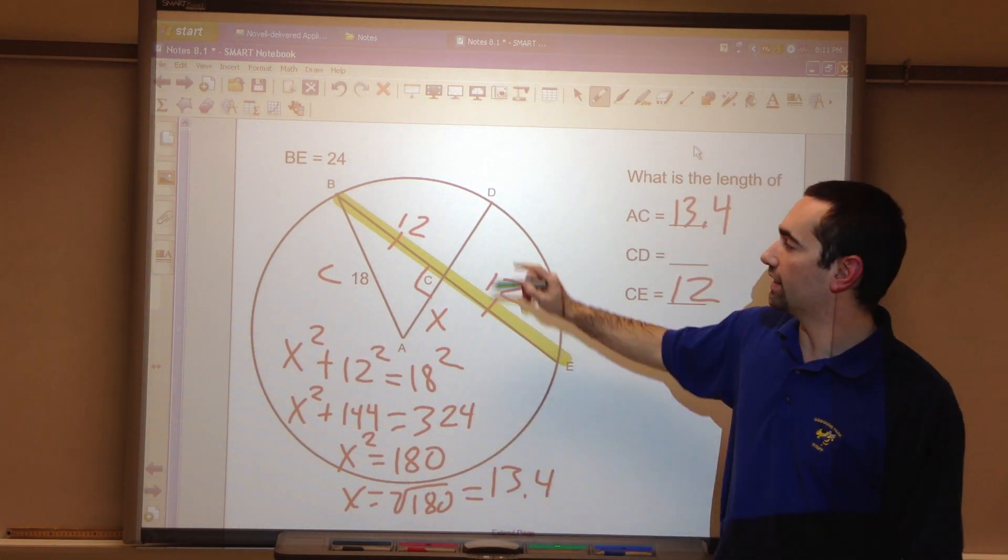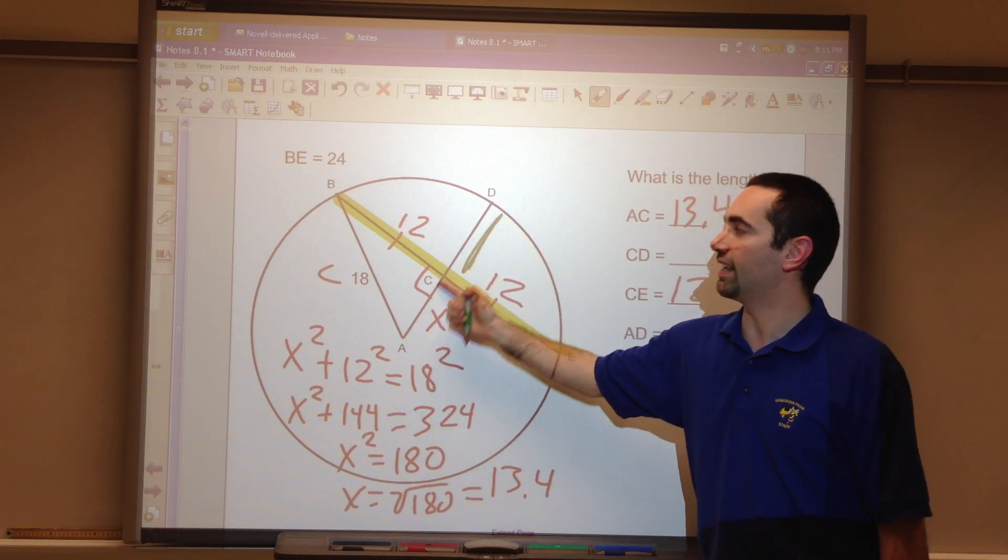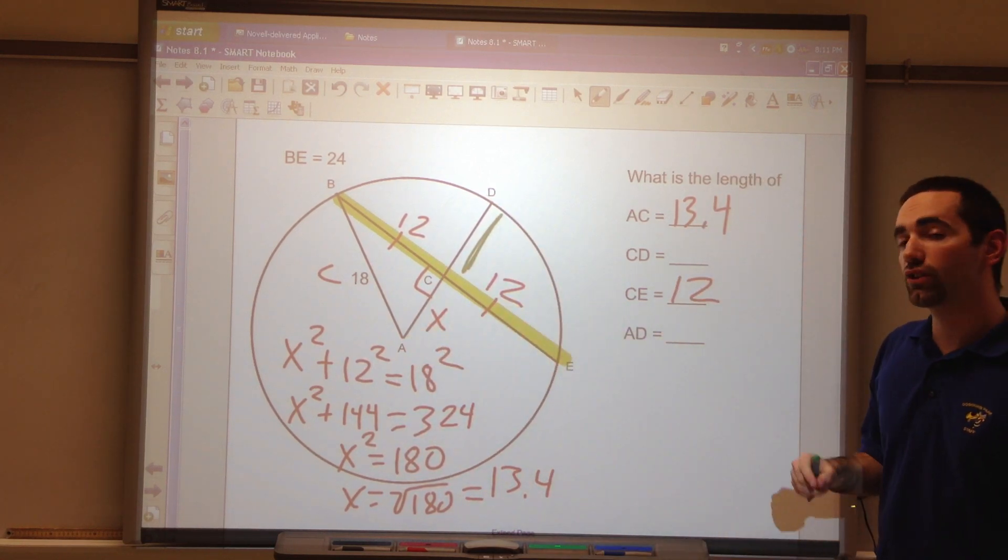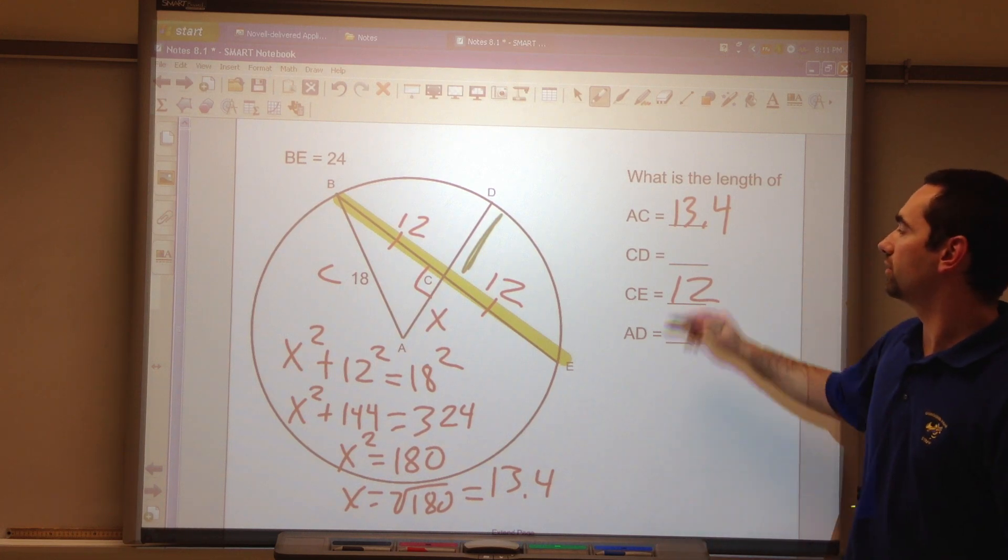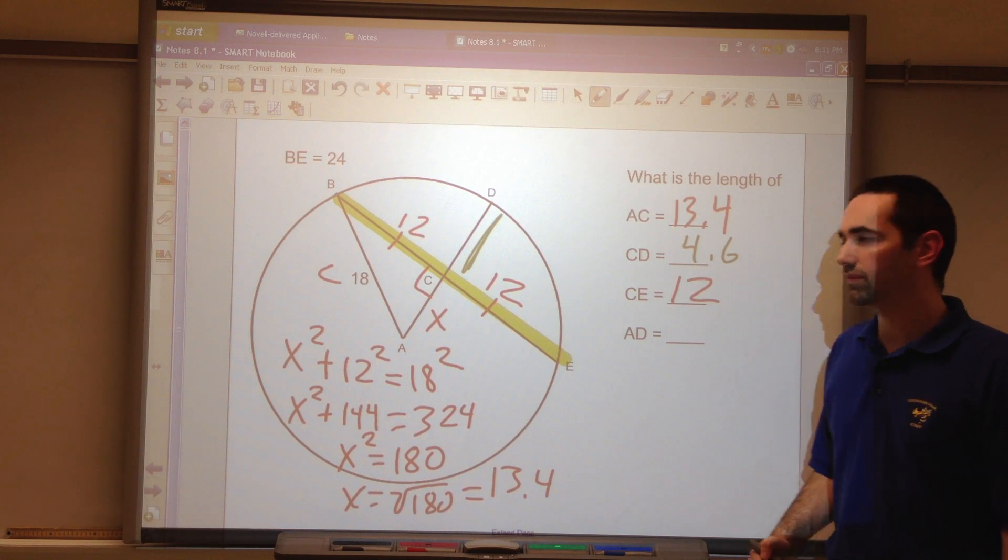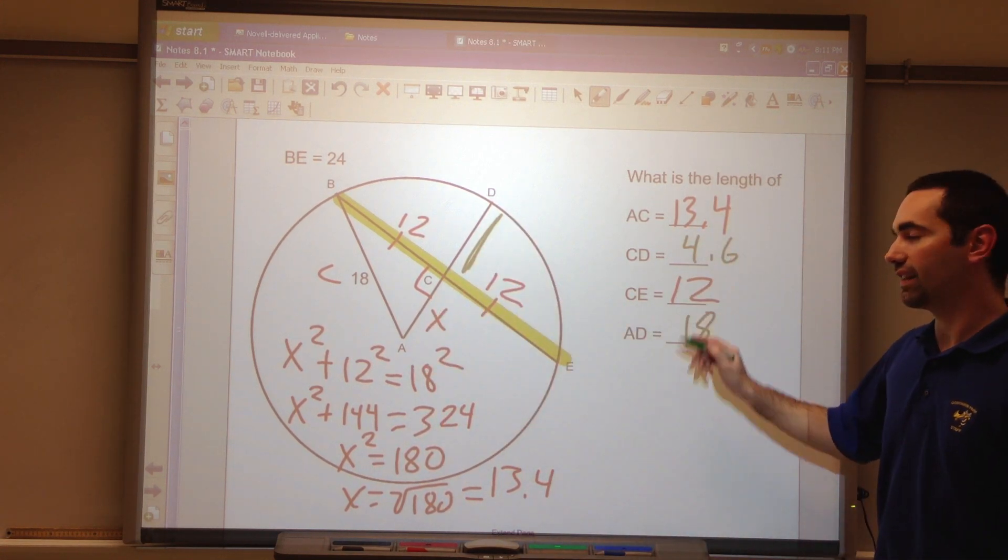So AC is 13.4. I've got to find the length of CD. This full length here is 18 because it's the radius. So I subtract 13.4 from it. 4.6. AD is the radius we already discussed. It's 18.